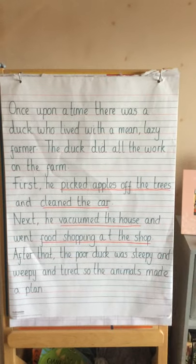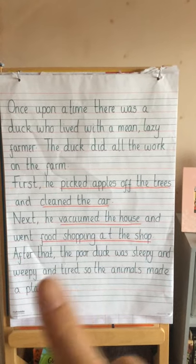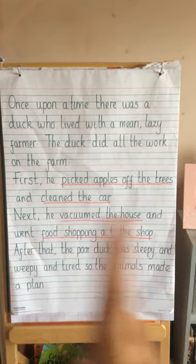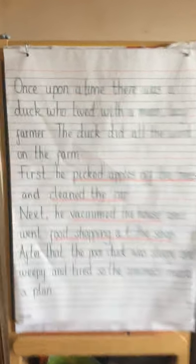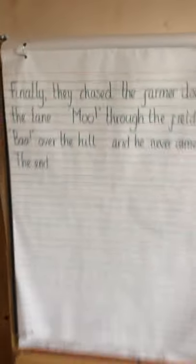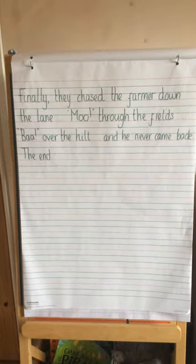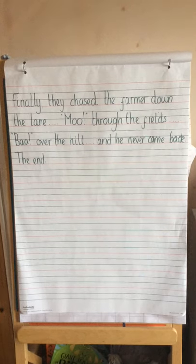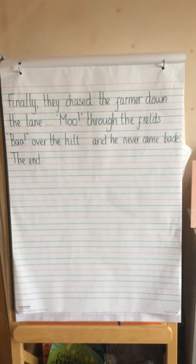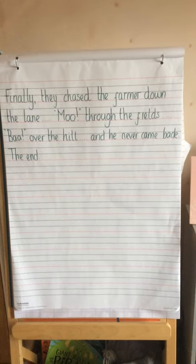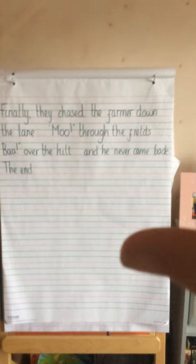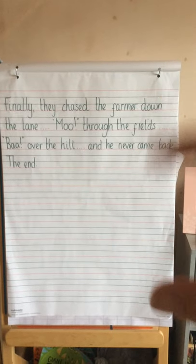After that, 'the poor duck was sleepy and weepy and tired, so the animals made a plan.' You're going to keep that in your story — that's what you're going to write, I'm not going to change that. And then the last bit: 'Finally, they chased the farmer down the lane, moo through the fields, about over the hill, and he never came back.' So that's going to be kept the same as well.